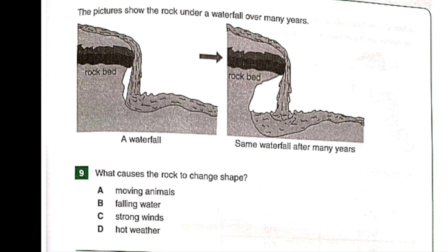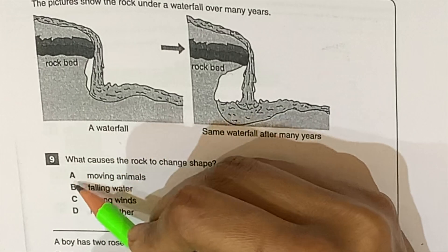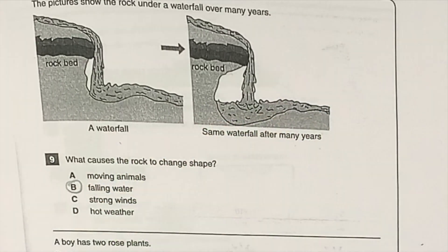The pictures show the rock under a waterfall over many years — the rock bed, and the same waterfall after many years. Question number nine: What causes the rock to change shape? A. Moving animals. B. Falling water. C. Strong winds. D. Hot weather. The answer is B: falling water.